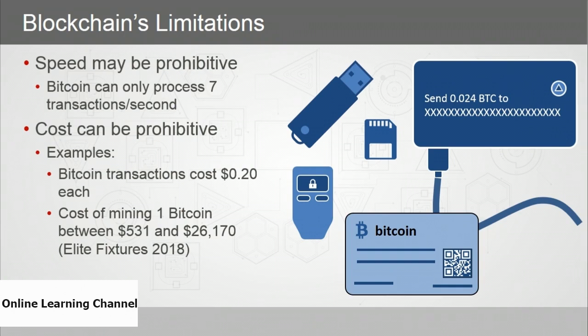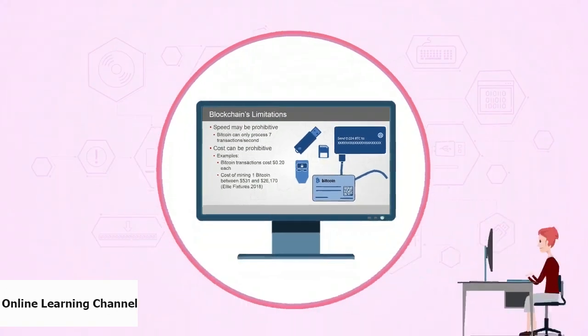That's an extreme example — Bitcoin has been around for 10 years and has a massive blockchain network. The energy costs related to mining Bitcoins are steep, but worth noting depending on what kind of blockchain you wish to implement and its scope.